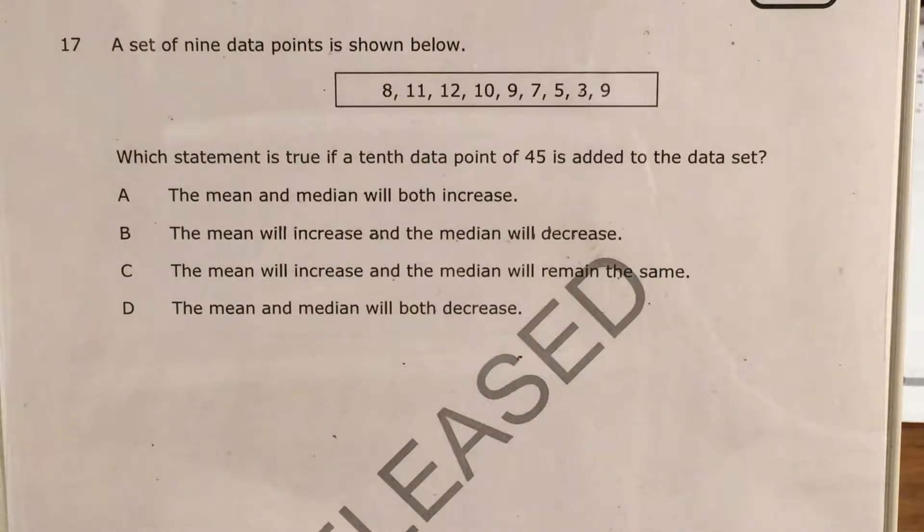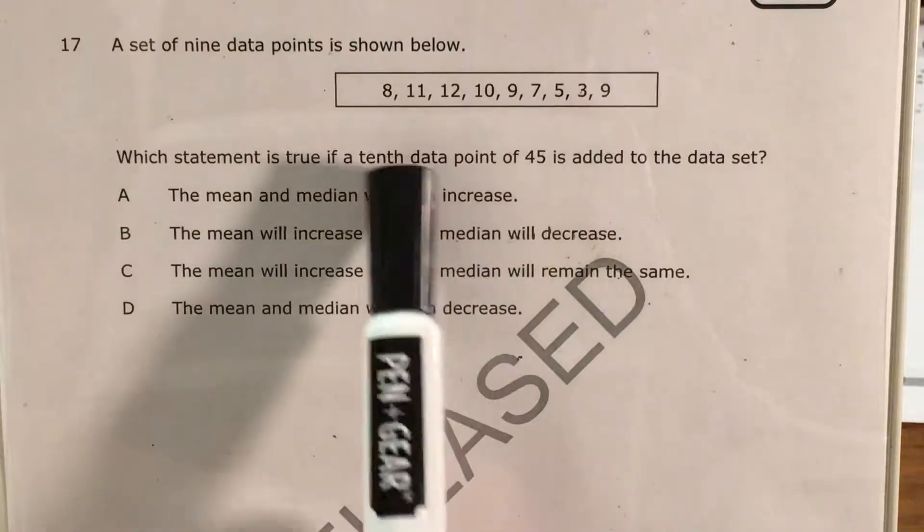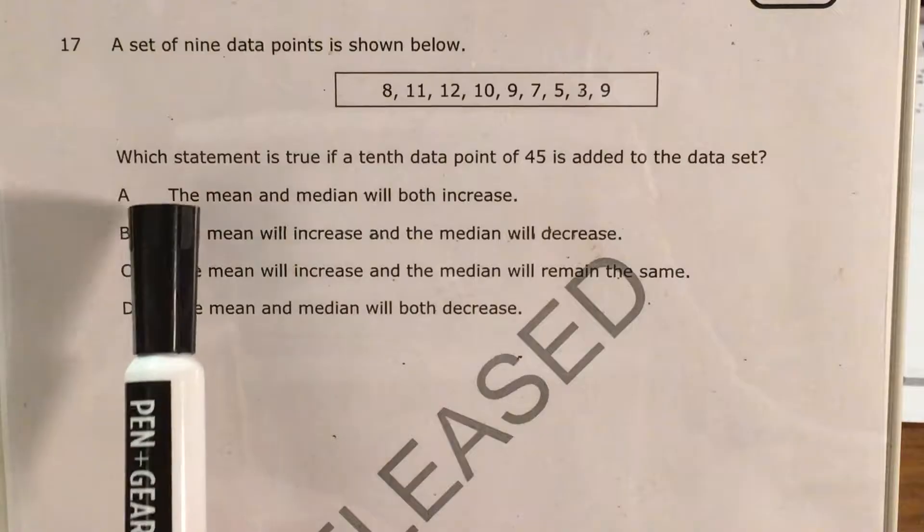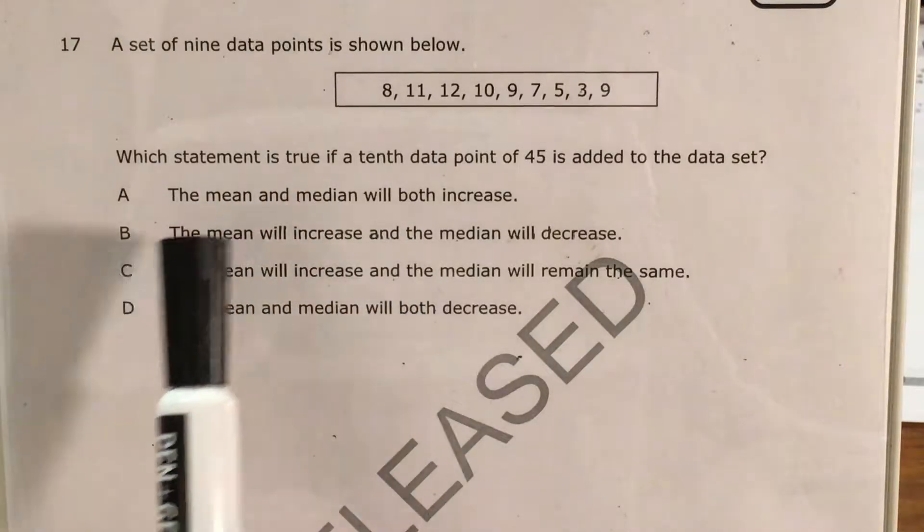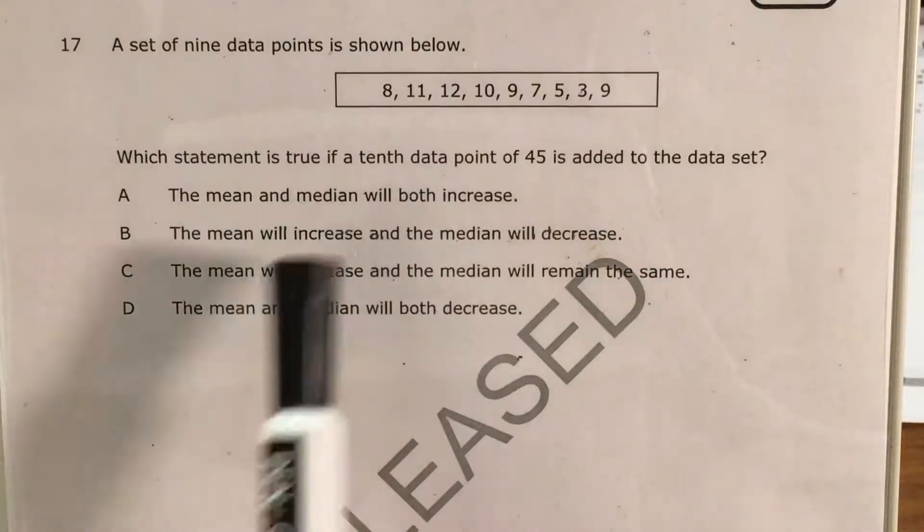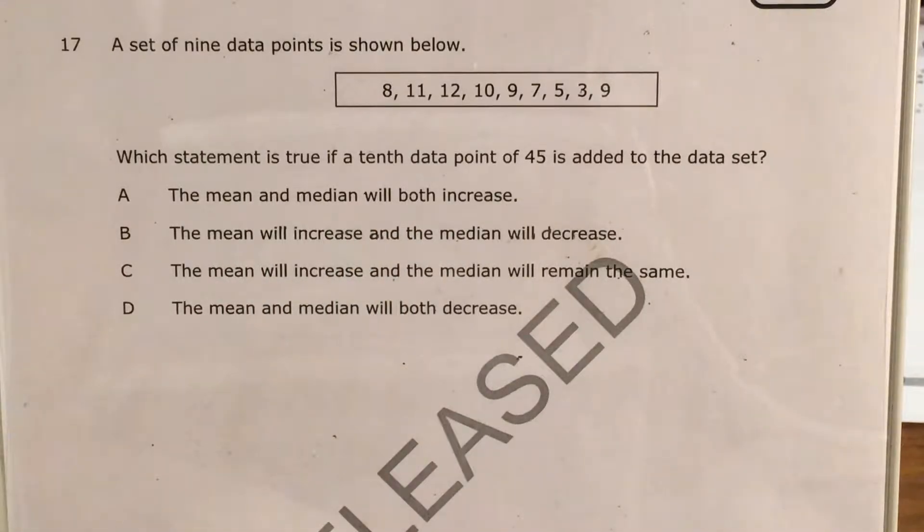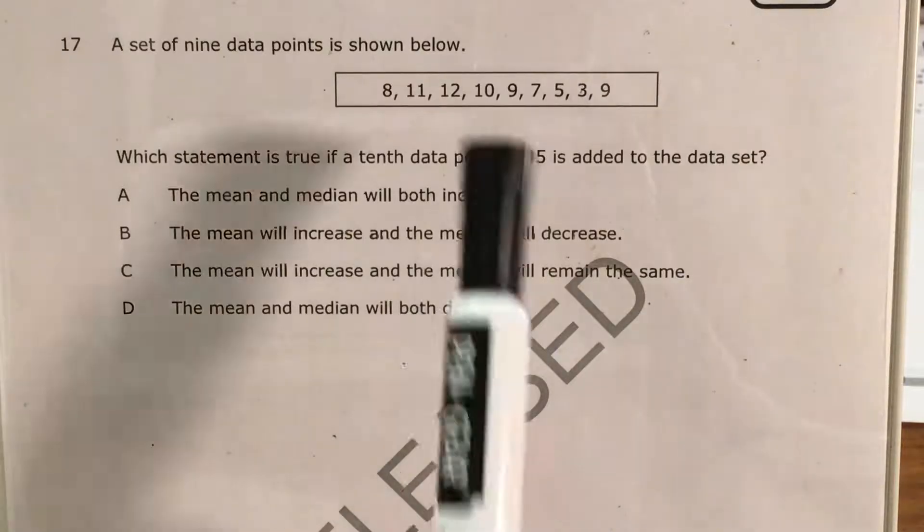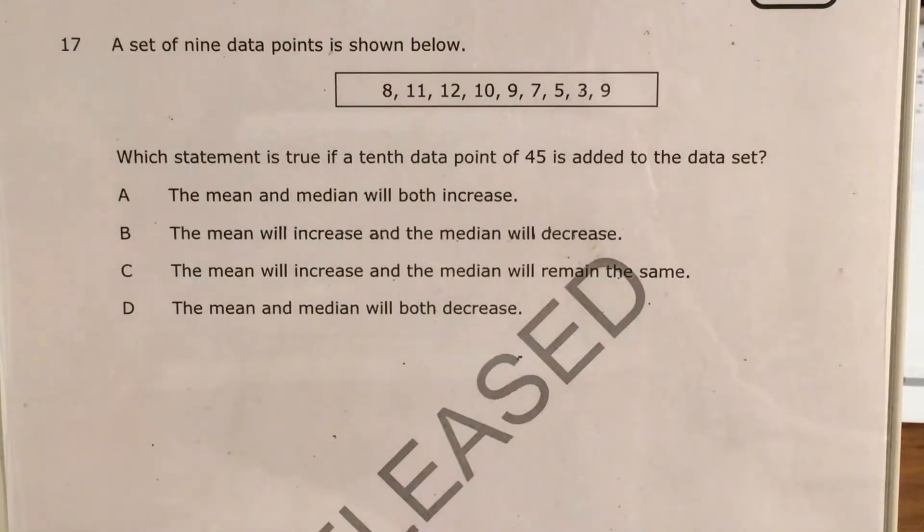Today we're going to tackle question 17 in the Math 1 questions that North Carolina released this past school year. The question gives us this set of 9 data points and asks us to say which of these 4 statements would be true if the 10th data point of 45 is added to this set. All of the answer choices have to deal with the mean and the median and comparing what those are going to be like from the original set to after we add the number 45 to it.